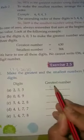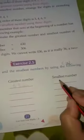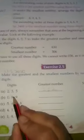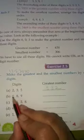So the greatest number is 532 and the smallest number is 235. Next example: 9, 8, 0.